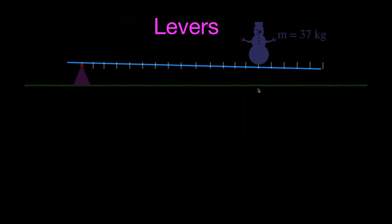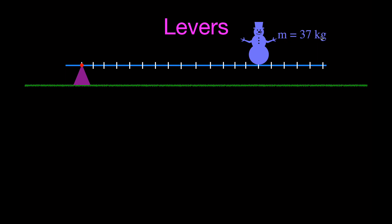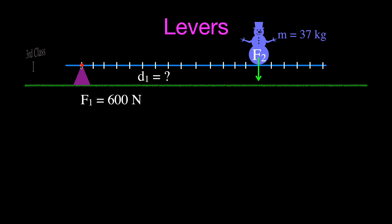We have two more examples — third-class levers. Here we have a snowman with a mass of 37 kilograms on our lever. We can apply a maximum force of 600 Newtons, and we want to know where we'd have to apply that force to lift the snowman. In this case, the input force is between the output force (the snowman) and the fulcrum, making this a third-class lever.